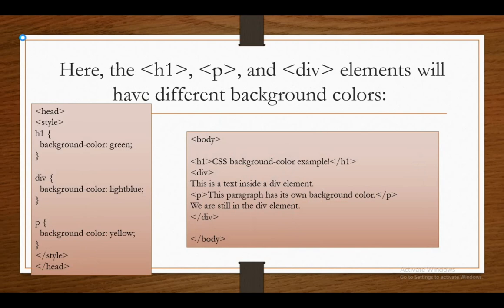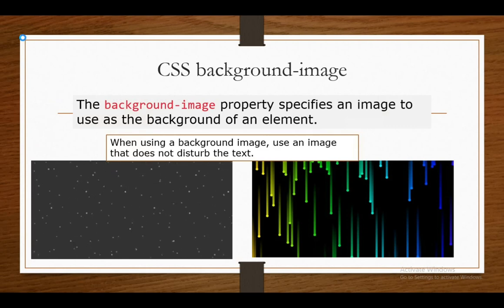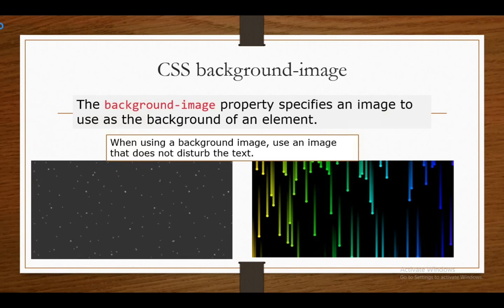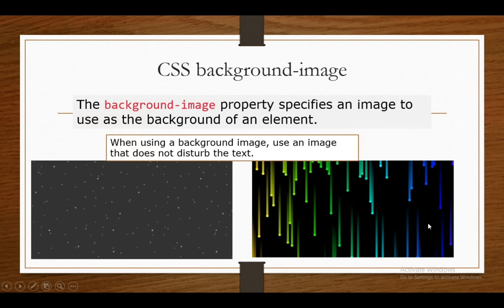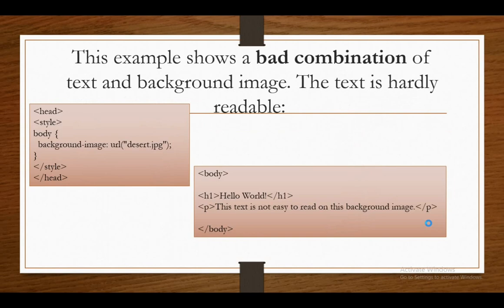Now I am going to tell about CSS Background Image. The background image property specifies an image to use as the background of an element. By default the image is repeated so it covers the entire element. I have given you two examples. When using a background image, use an image that does not disturb the text. With the first image you can see the text clearly, but with the second image you can't see the text clearly. The second example shows a bad combination where the background image makes the text hardly readable.